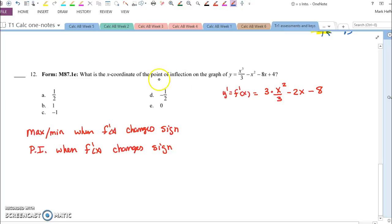So you've been asked for a point of inflection, and hopefully you are starting to know, or know for a long time, that the max and min happen when the derivative changes signs, and the points of inflection happen when the second derivative, f double prime of x, changes signs.